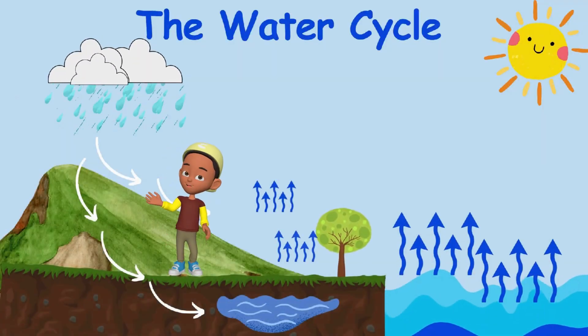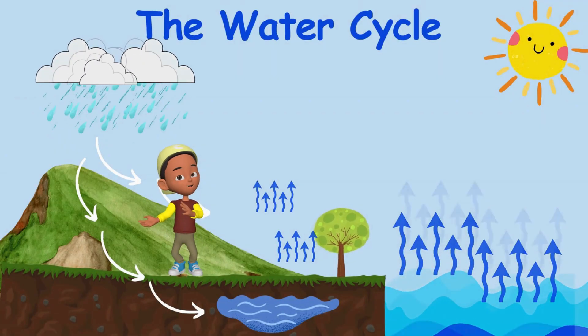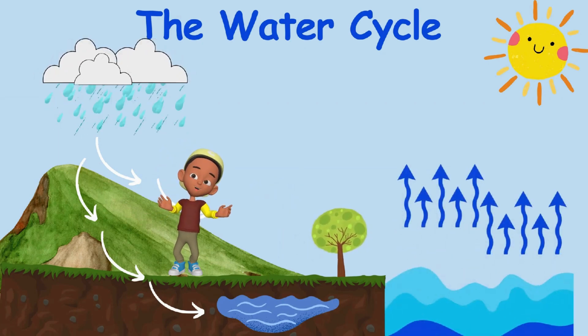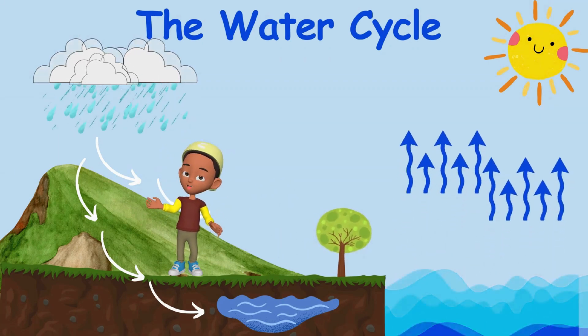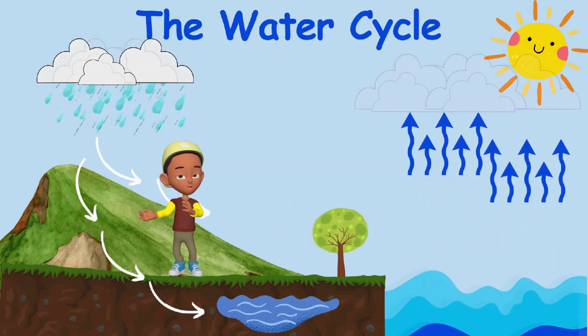Also, after precipitation, water which fell into the oceans, lakes, and rivers is heated up by the sun and turns into vapour. This is called evaporation.